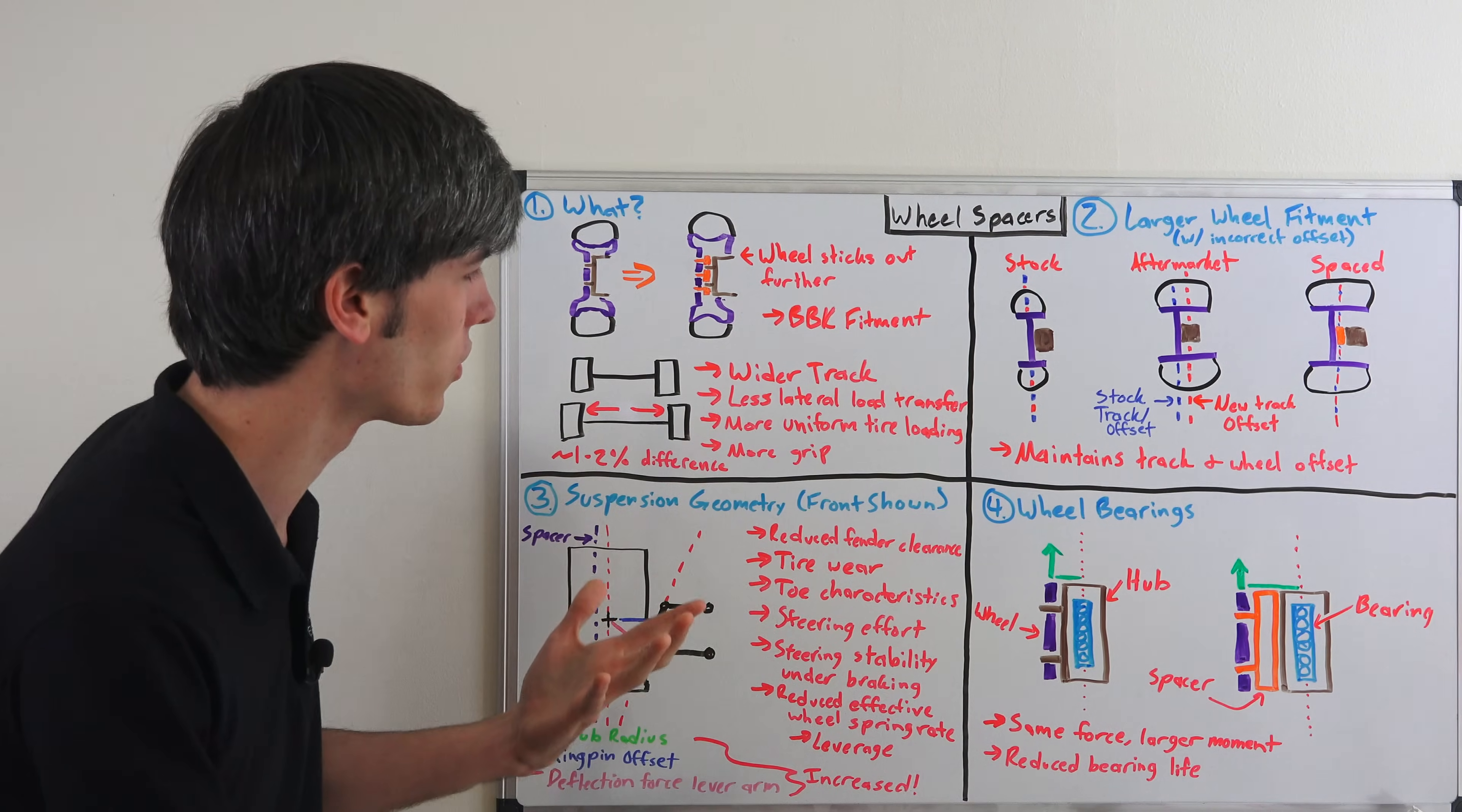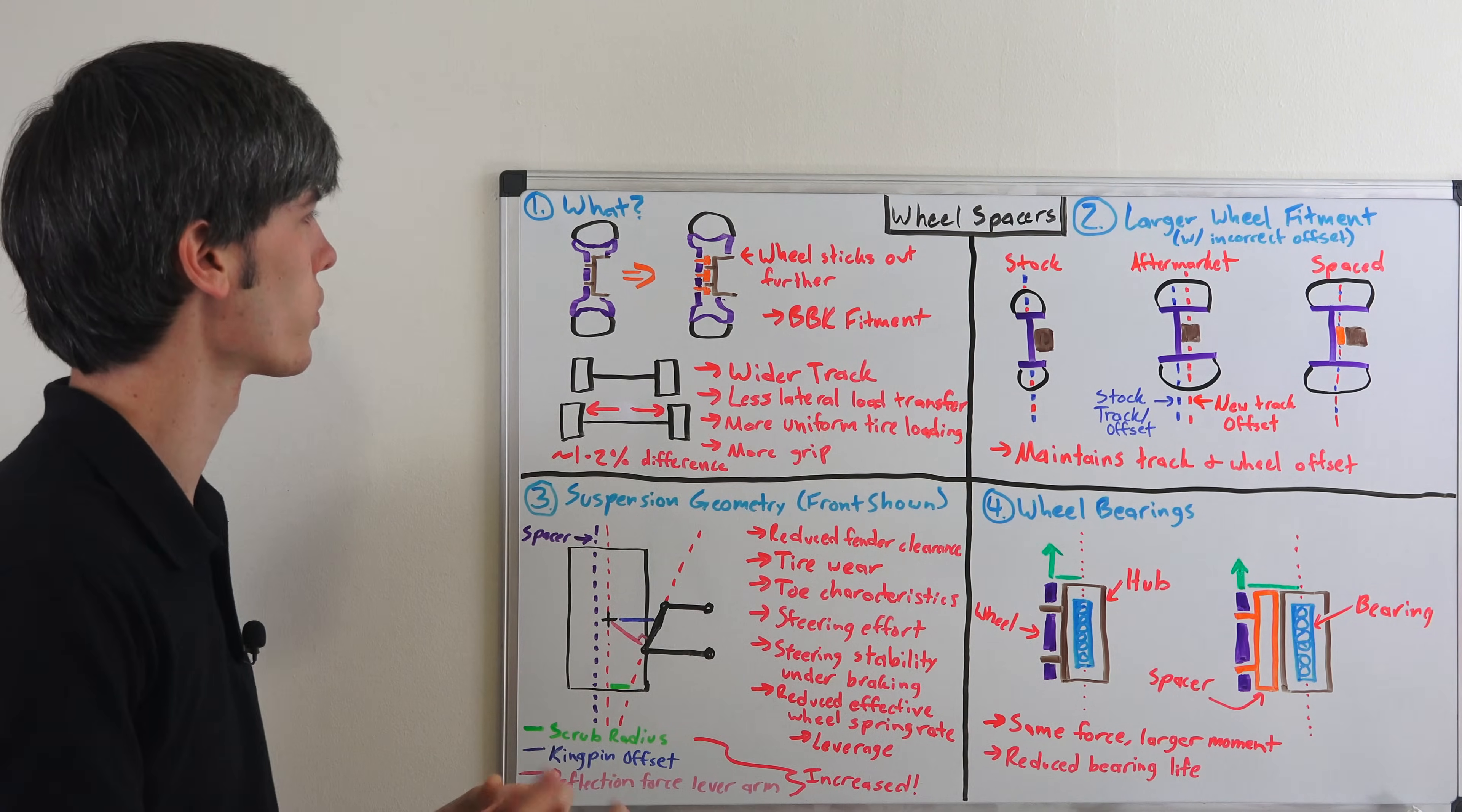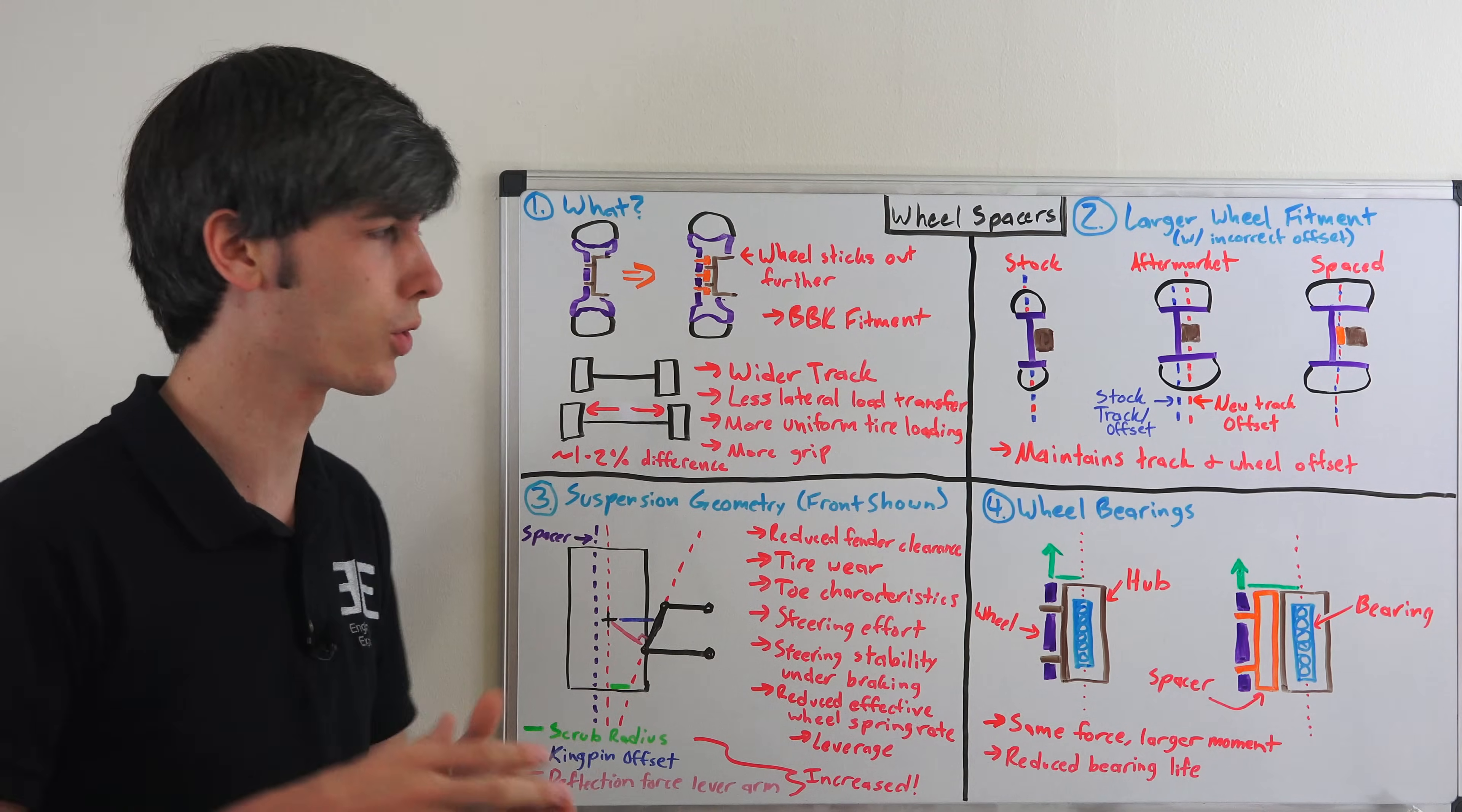So why might you do this? What are some reasons for it? And what are some of the drawbacks of doing something like this? So I'm going to work through four different sections here. First of all, just explaining what it is. So you add in a spacer to your hub and that pushes your wheel out so you have a larger track.